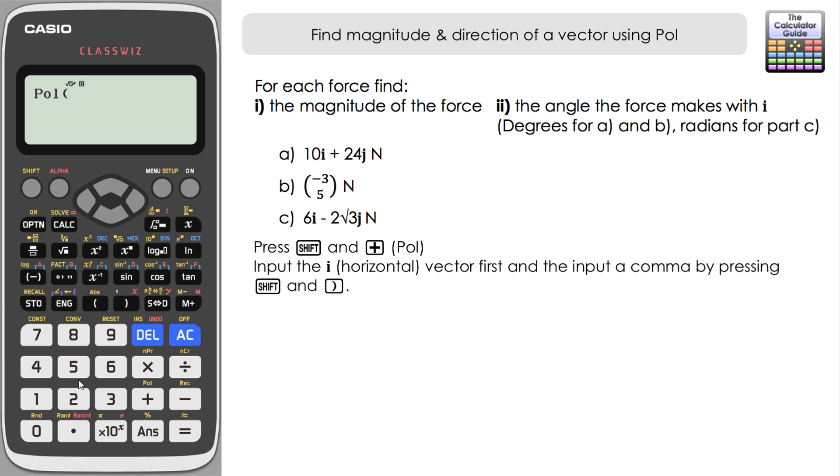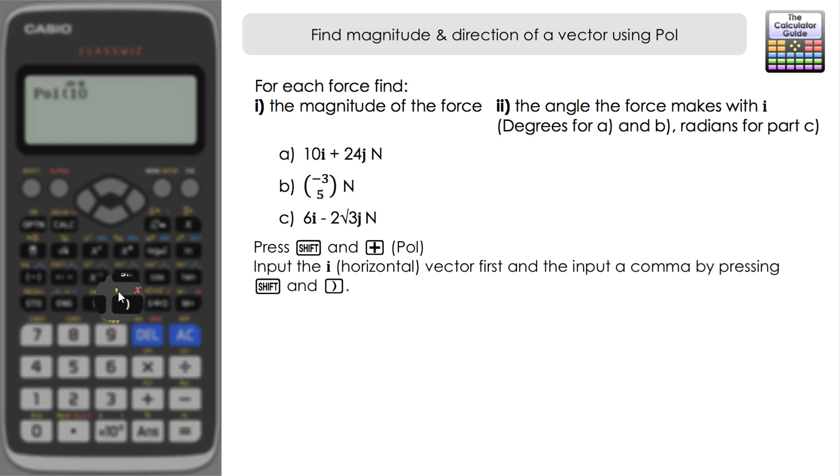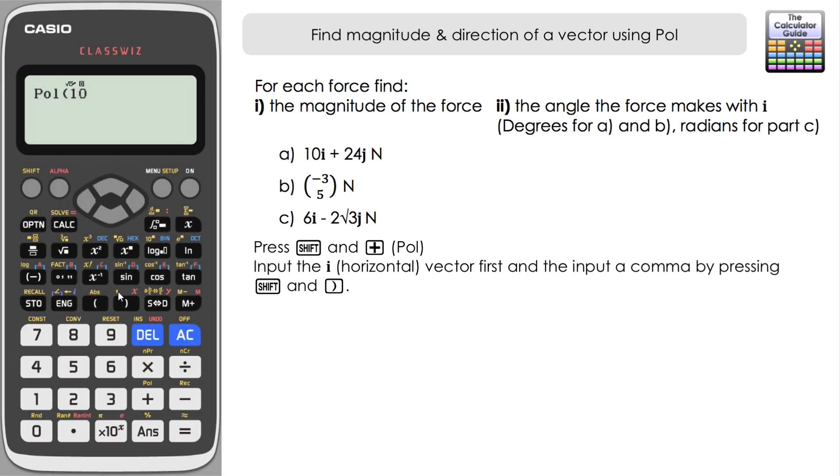We're going to input the I direction vector first and then the Y direction vector. In this first example we've got 10i so we're going to input just 10, and then we want a comma in between them. The comma is shift and right bracket to input a comma and then we're going to input the J vector, the vertical vector which is 24, and then close brackets.